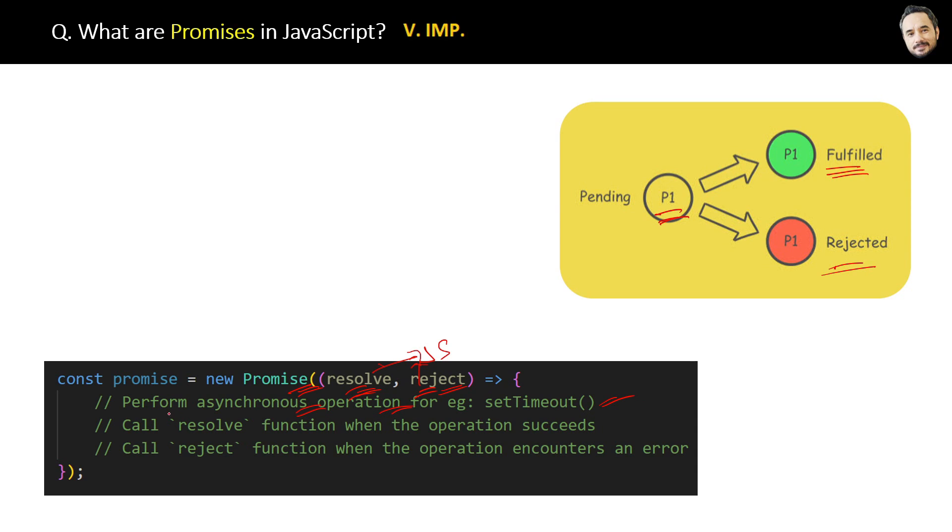After the asynchronous code, if your Promise operation is successful, it will call the resolve function. If it fails, it will call the reject function. These are the basic steps to set up a Promise.